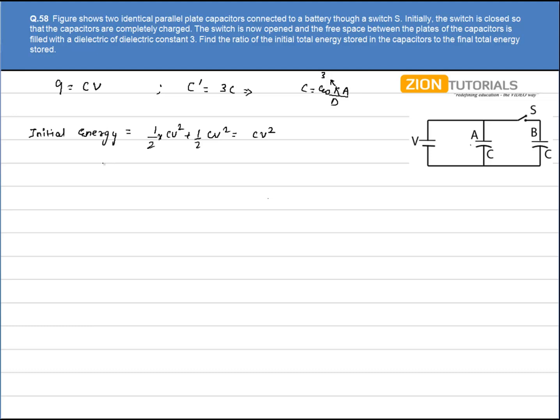Now in the second case, when the capacitance is 3 times, when switch S is opened, this capacitor is having a charge Q. Since it is open, the charge on B will remain constant, that is QB will be constant. Since QB will be constant, I can write that C initial times V initial equals C final times V final.